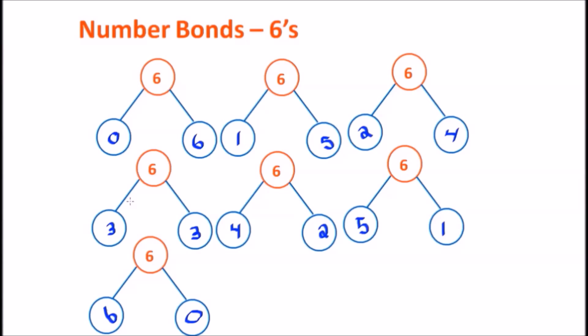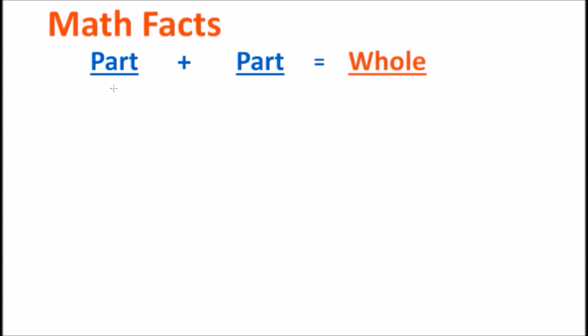Seven number bonds. We found seven different ways to make the number 6. So what does this do with addition? Well, for addition, now we know that 0 plus 6 equals 6. 1 plus 5 equals 6.